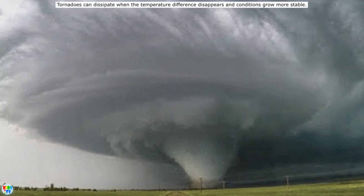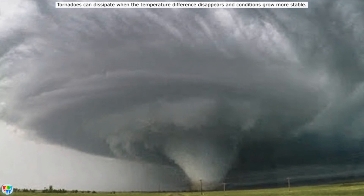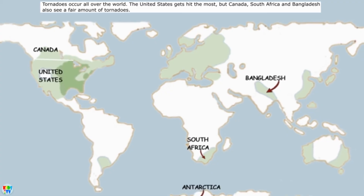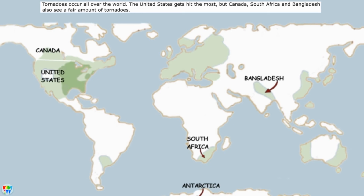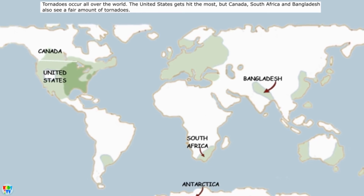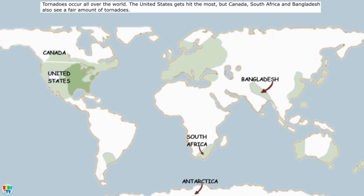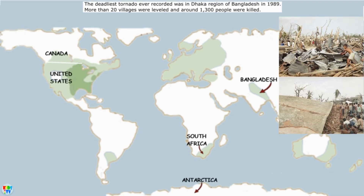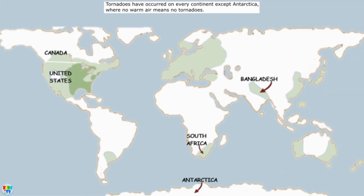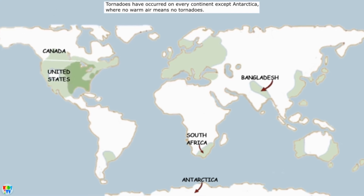Tornadoes can dissipate when the temperature difference disappears and conditions grow more stable. Tornadoes occur all over the world — the United States gets hit the most, but Canada, South Africa, and Bangladesh also see a fair amount. The deadliest tornado ever recorded was in the Dhaka region of Bangladesh in 1989, where more than 20 villages were leveled and around 1,300 people were killed.